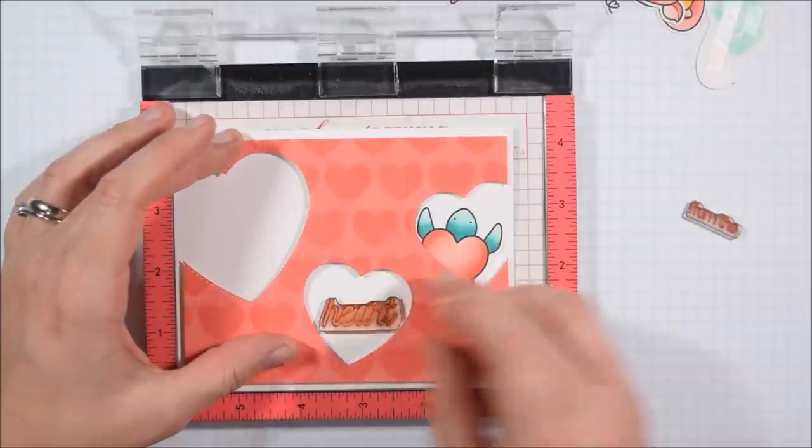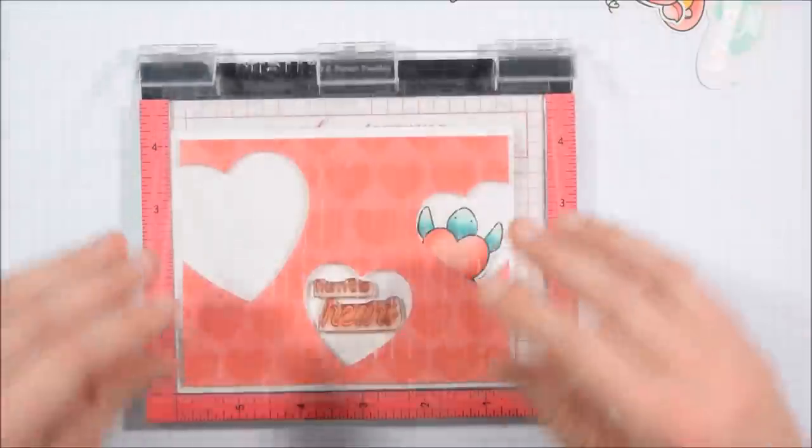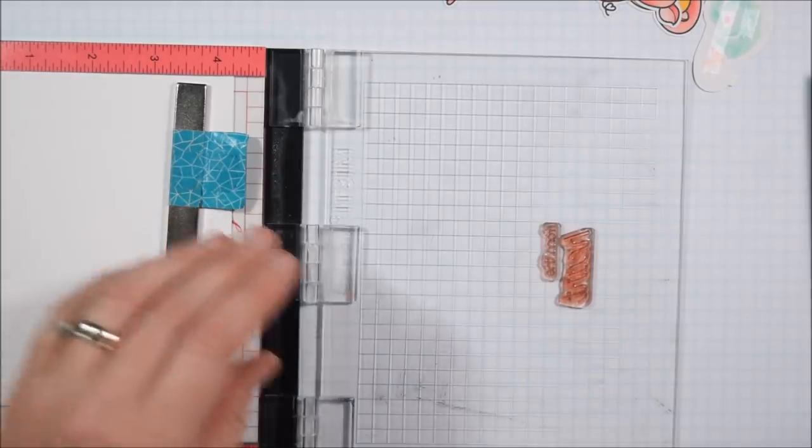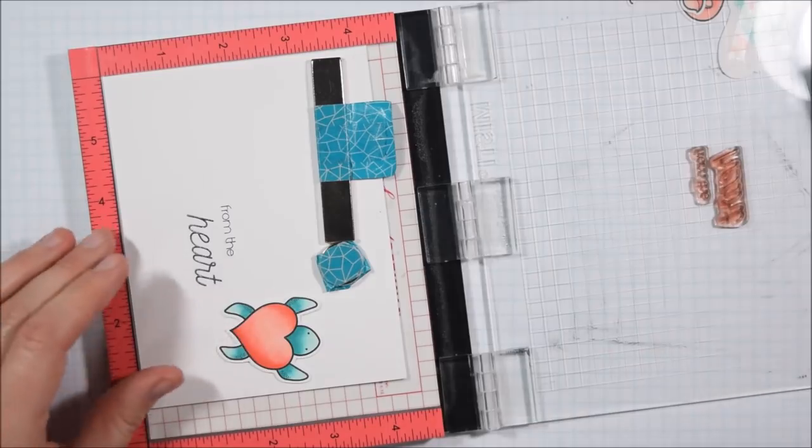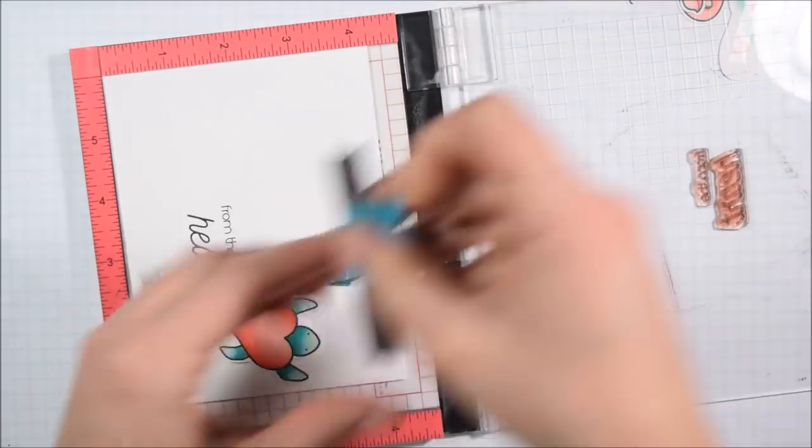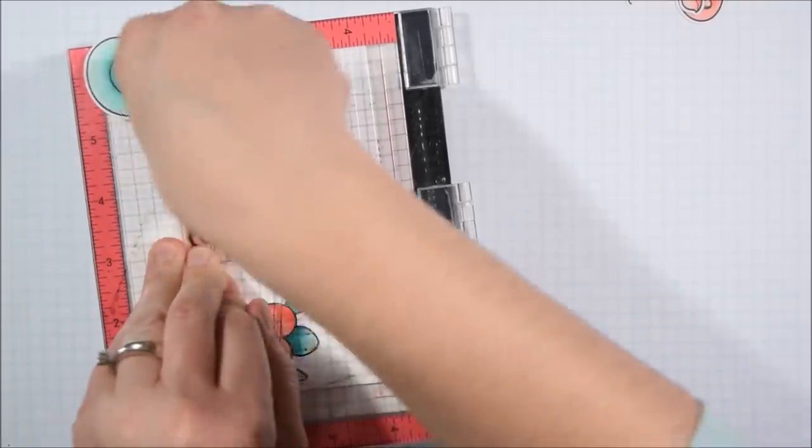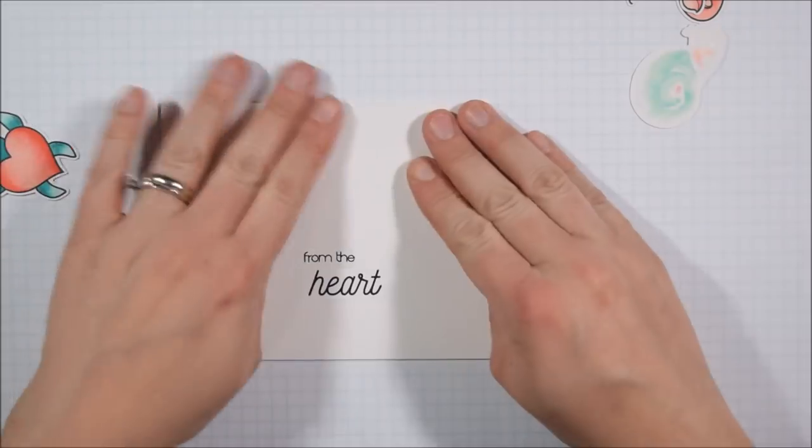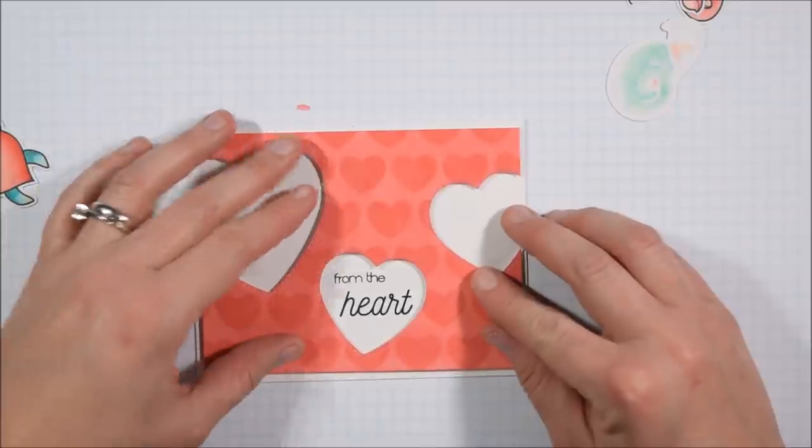For my sentiment in that stamp set, there are some ways you can build sentiments rather than just forcing it to say from the heart. When Christine designed it, she did 'from the' and 'heart' separately so that you could mix and match the different parts of the sentiments. I like that about a lot of Create a Smile stamp sets. Not only do they have a lot of punny sentiments, they also are kind of broken up to be a little bit more versatile, and I appreciate that.